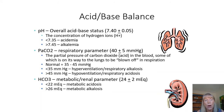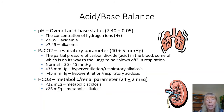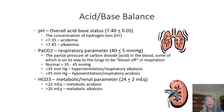Finally, bicarb is our metabolic parameter. It has a very tight range of just 22 to 26. If you're under 22, you're acidotic. If you're over 26, you're alkalotic — that would be a metabolic alkalosis. So those are our three parameters we're going to spend the most time looking at.